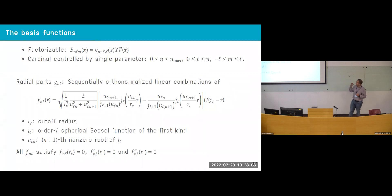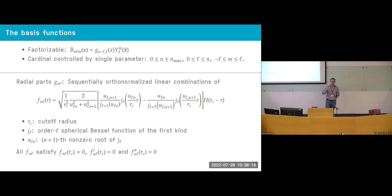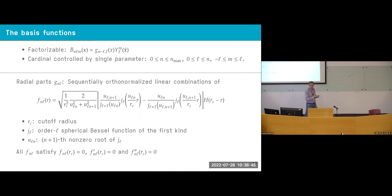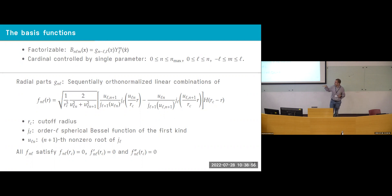The secret of the recipe is in how we build the radial functions. We start from spherical Bessel functions, but instead of taking just one, we take a linear combination of two for each radial basis function, parameterized so that at the cutoff radius, the function, its first derivative, and its second derivative are all zero. This ensures nothing dramatic happens when a particle crosses the cutoff — the physical description is as smooth as possible, keeping the physics invariant with respect to particles crossing that boundary.